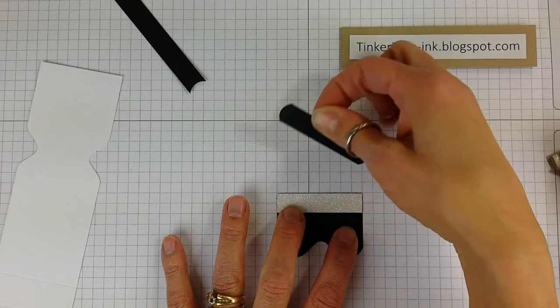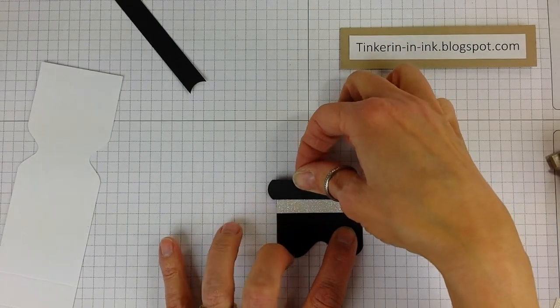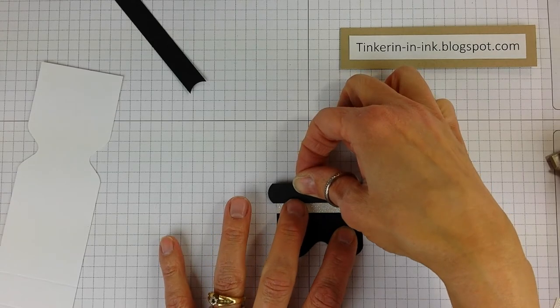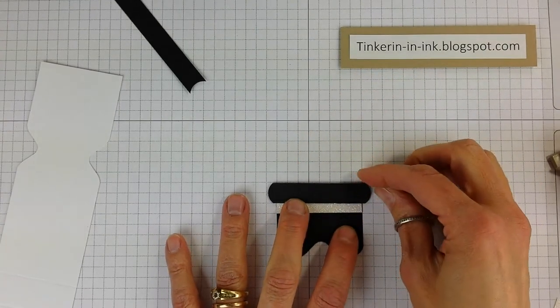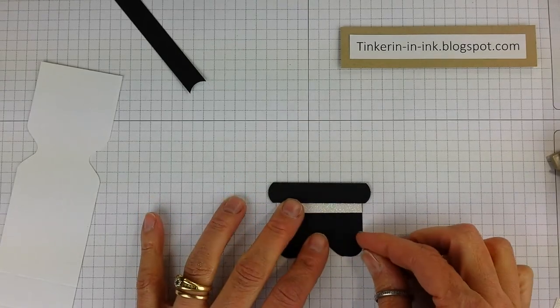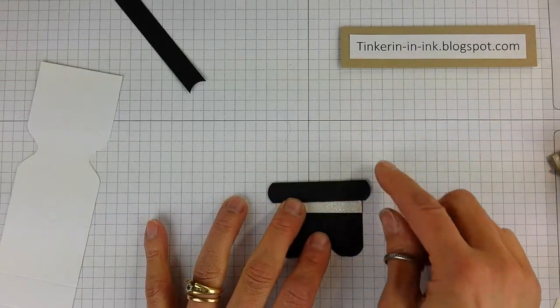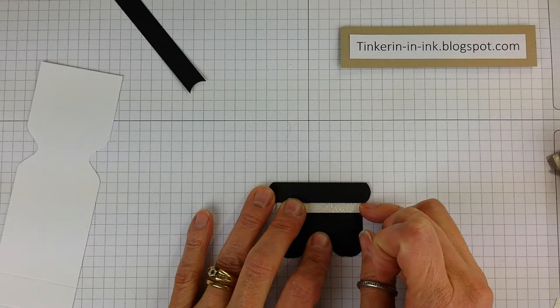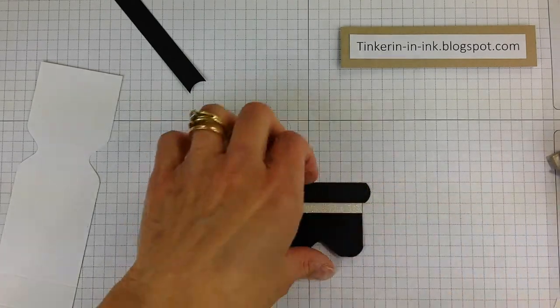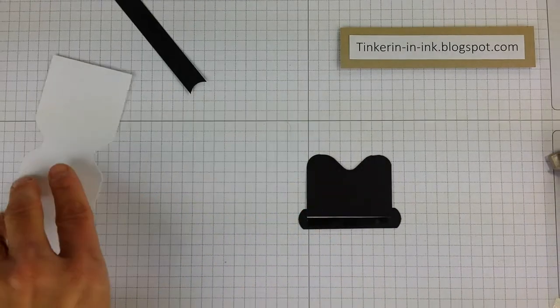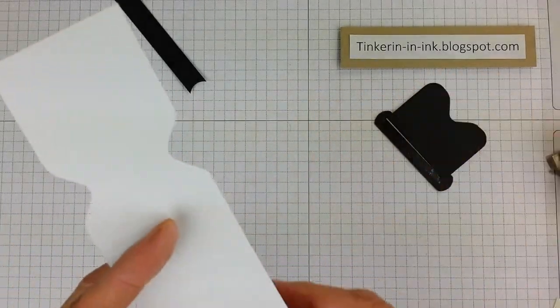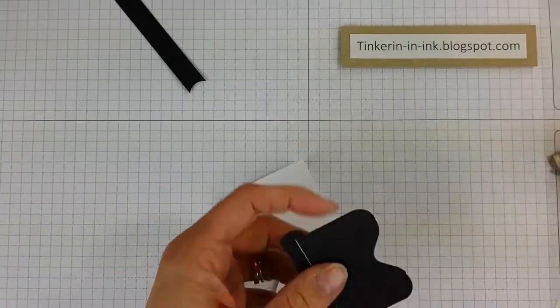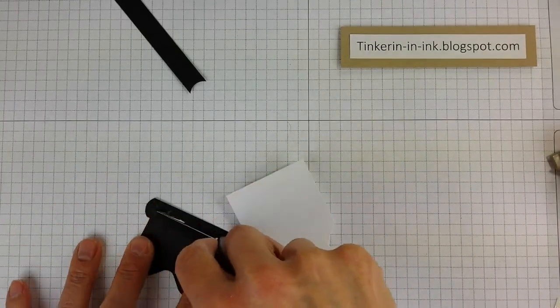So depending on how much of that glimmer paper you want showing and how high you want his hat, I use my grid paper to help me center that too. I like my grid paper. It's pretty darn handy. Almost there. Come on. Nudge. Okay. Looks pretty good.